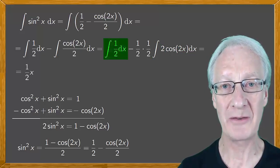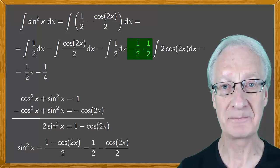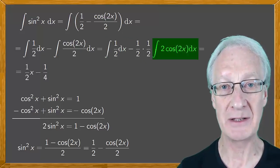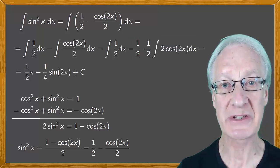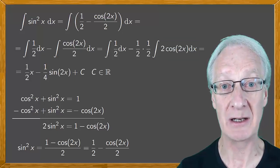So, we have a half x minus a quarter times our integral, which evaluates to sine 2x plus c, where c is in R.